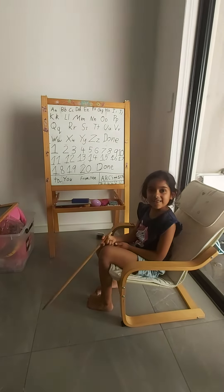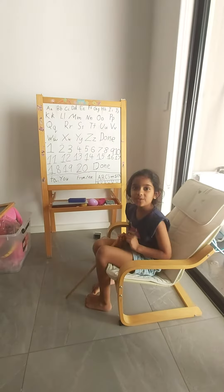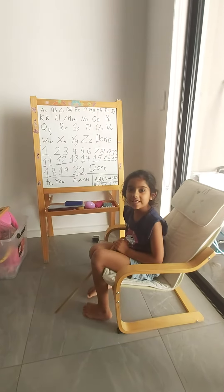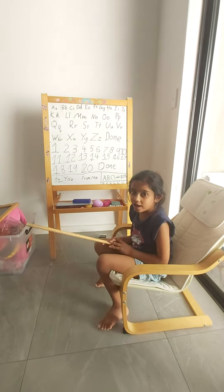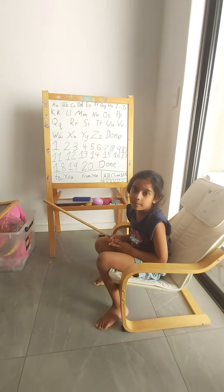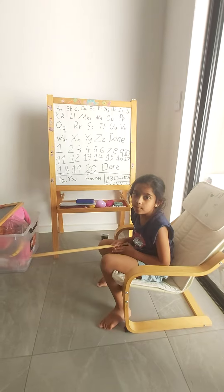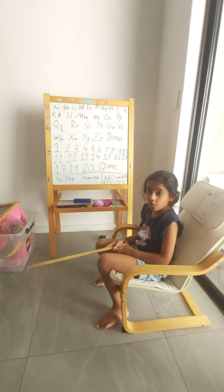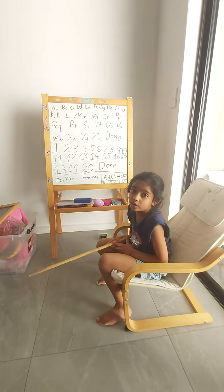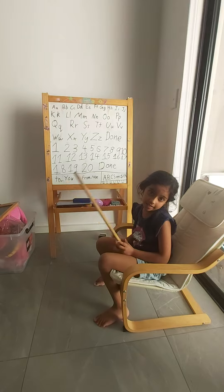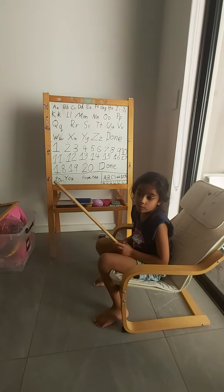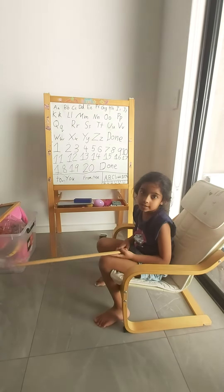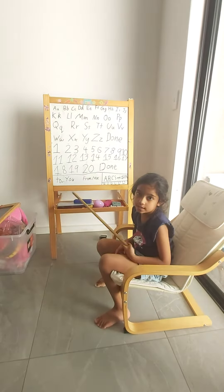So today we're going to do 1, 2, 3 and ABCs. This one is for preschool people who don't know ABCs and 1, 2, 3s. The ABCs is A to Z and the 1 to 3s is 1 to 20. So let's start.